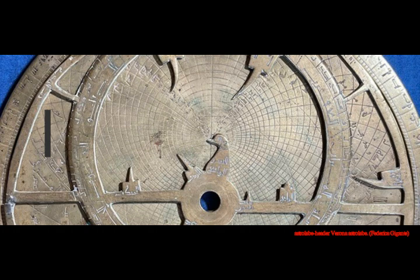That versatility is on full display in what Gigante calls the Verona astrolabe because it was discovered in the collection of the Fondazione Museum in Verona, likely obtained as part of the collection of noble and art collector Ludovico Moscardo, who lived in Verona in the 17th century.